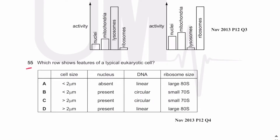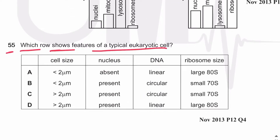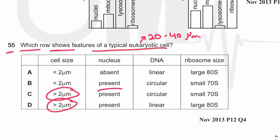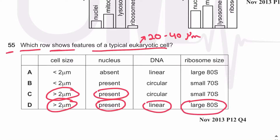The size of a typical eukaryotic cell is between 20 and 40 micrometers, so cell size is greater than 2 micrometers. A nucleus is present, DNA is linear, and ribosome size is large. The answer is D.